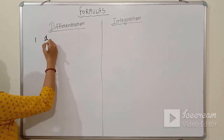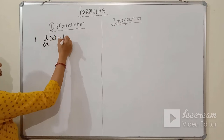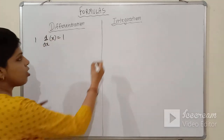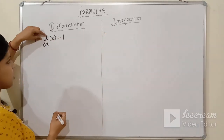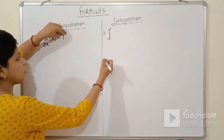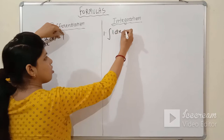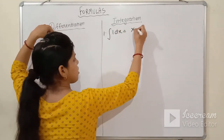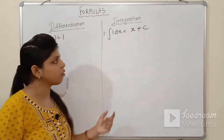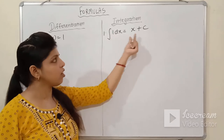The first formula: d/dx of x is 1. All of you know that the derivative of x with respect to x is 1. In the same way, when I shift this differential operator to the right-hand side, it becomes the integration of 1 with respect to x, so the answer will be x + C. This is the indefinite integral, so we always put a constant of integration C.